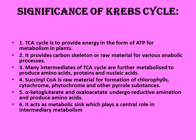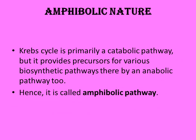Succinyl-CoA is a raw material for chlorophyll, cytochrome, phytochrome, and other pyrrole substances. Alpha-ketoglutarate and oxaloacetate undergo transamination to form amino acids. The Krebs cycle acts as a metabolic link playing a central role in intermediary metabolism. It is primarily a catabolic pathway but also provides precursors for various biosynthetic anabolic pathways, making it an amphibolic pathway.